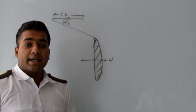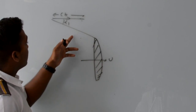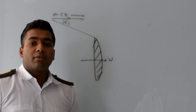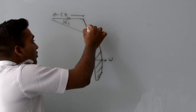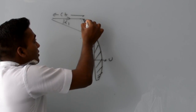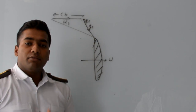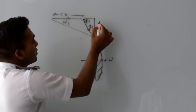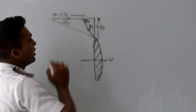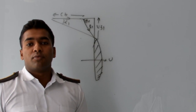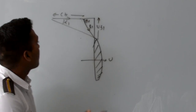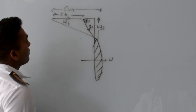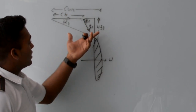Steam enters the moving blade at an angle alpha1 with the absolute velocity c1. Since the moving blade has a linear velocity, there will be a relative velocity, represented by r1, at an angle beta1. The velocity of flow at inlet will be represented by vf1, and the whirl velocity at the inlet of the moving blade will be represented by cw1. This completes the inlet velocity triangle of your impulse turbine.